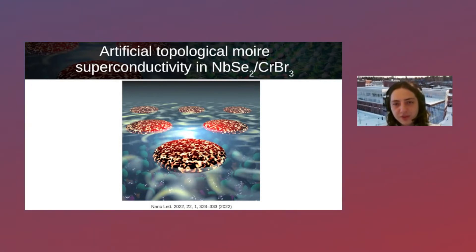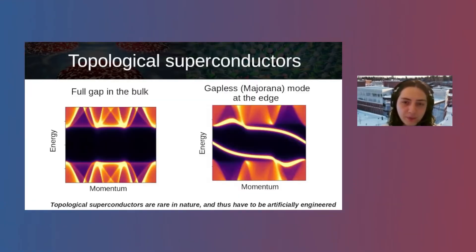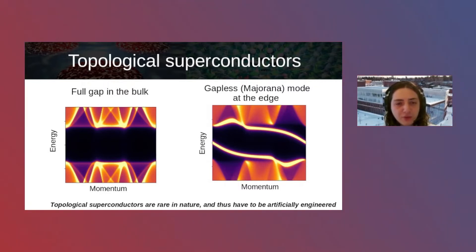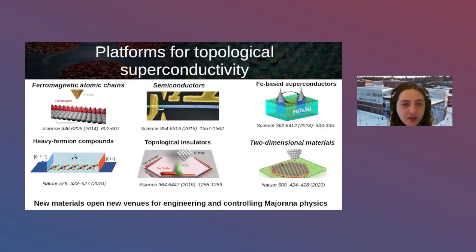Let me start with the first material: NbSe₂ on top of CrBr₃, and how we can see topological superconductivity driven by the moiré pattern. As a starting point, in a superconductor the electronic structure has a gap due to pairing between electrons. A topologically trivial system has a gap both in the bulk and at the surface, whereas a topological superconductor has a bulk gap but gapless excitations at the surface — the topologically protected Majorana excitations.